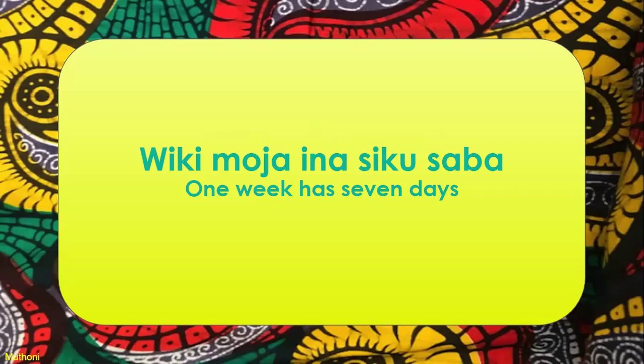Wiki Moja ina Siku Saba. One week has seven days. If you remember from our last video, we looked at numbers one to one hundred. Wiki is the word for week or weeks in Kiswahili. When we say Wiki Moja, we mean one week. Ina — it has. Siku Saba — seven days.